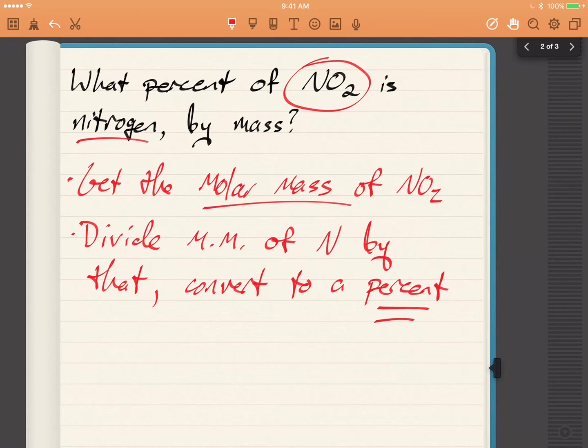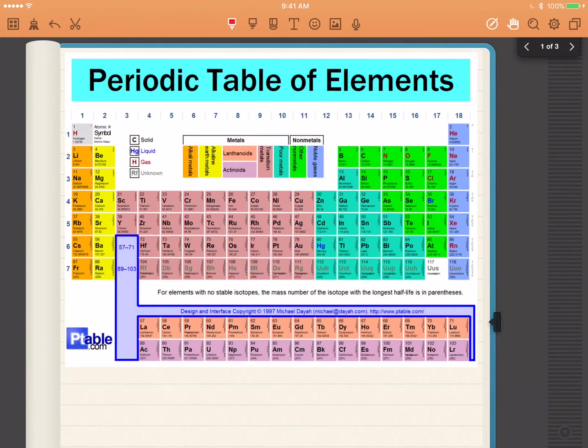Whenever you want to look up molar mass, you always go to the same thing, periodic table. So let's take a look. You've got nitrogen. This is a bit small. You've got nitrogen, and you've got oxygen right here.